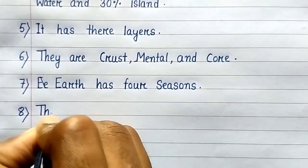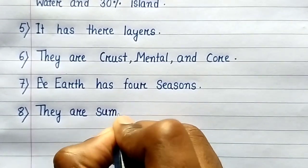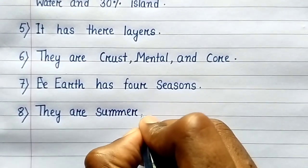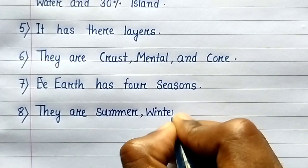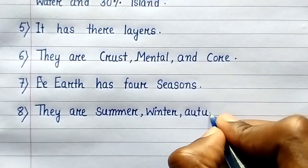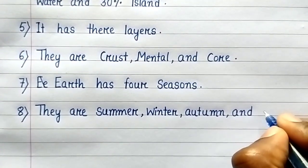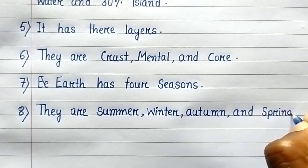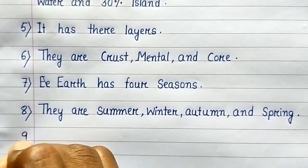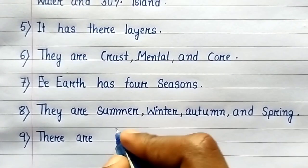Seventh line: Earth has four seasons. Eighth line: They are summer, winter, autumn, and spring.